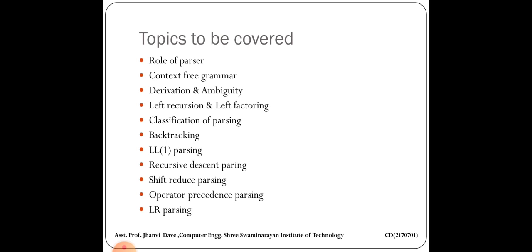In this chapter, we will see: first, the role of parser; then context-free grammar, which is the fourth unit of theory of computation — covering derivation, ambiguity, left recursion, left factoring, generating strings from context-free grammar, and generating context-free grammar from strings. The actual unit starts from classification of parsing, followed by top-down parser and bottom-up parser.